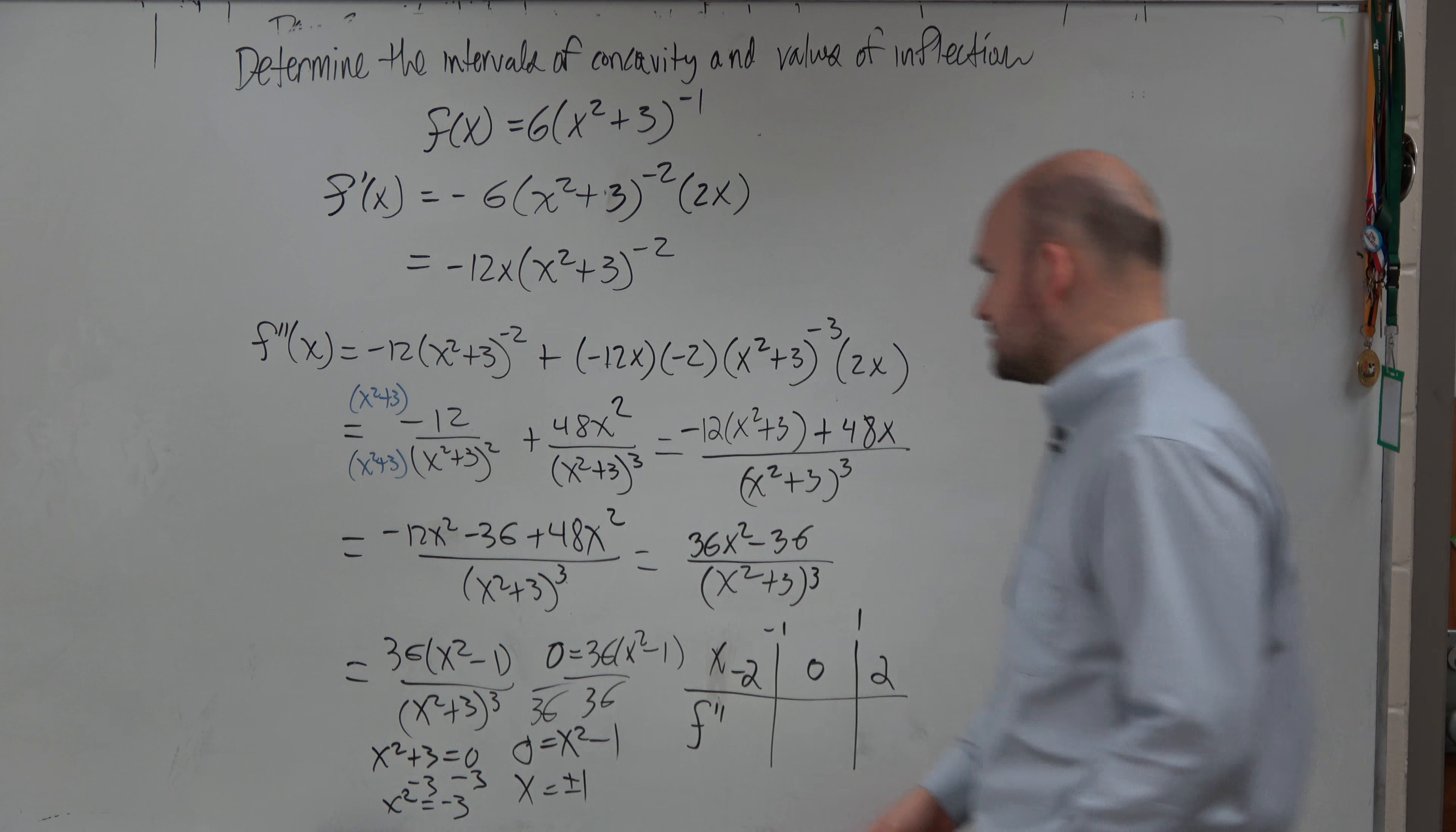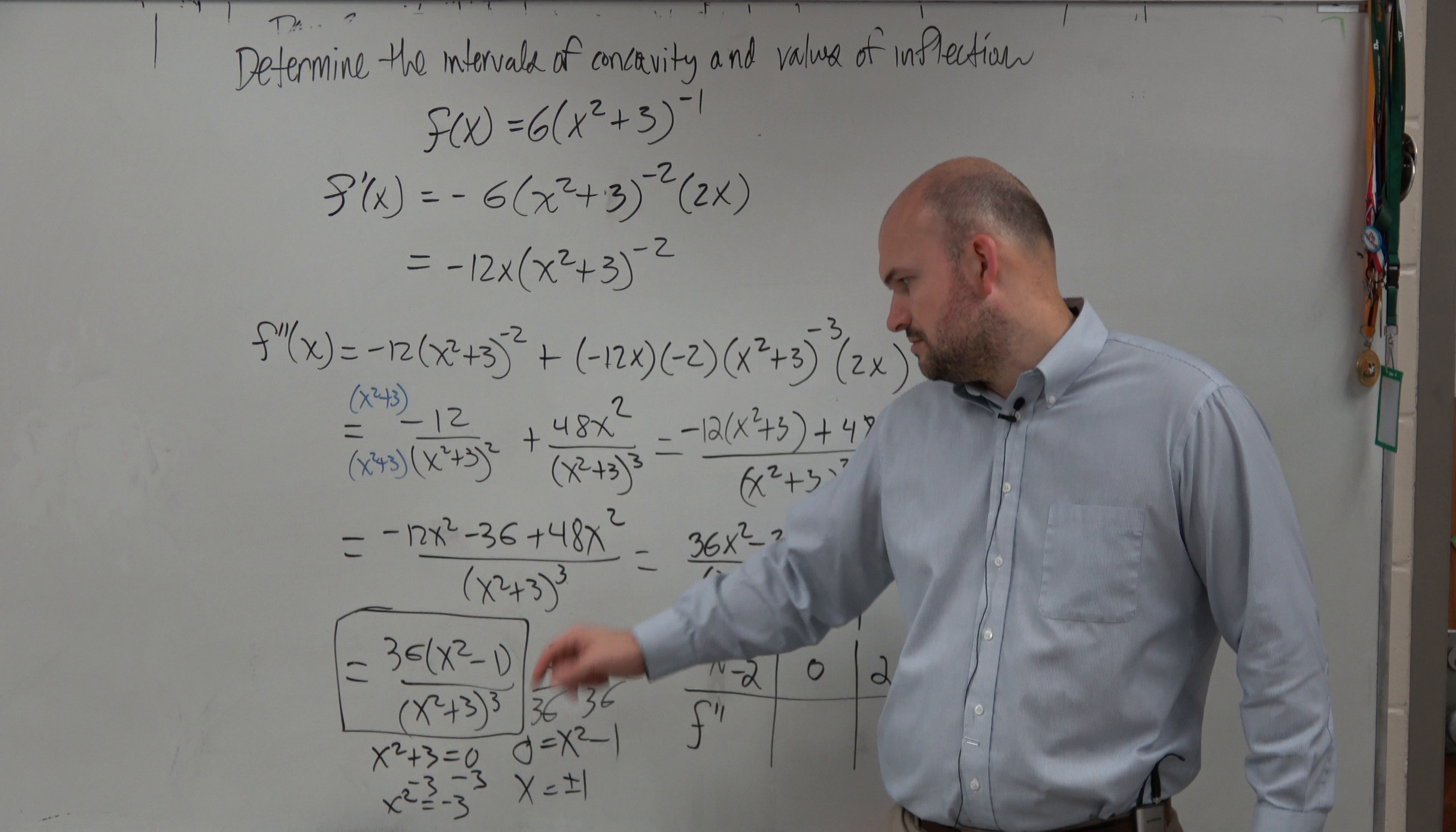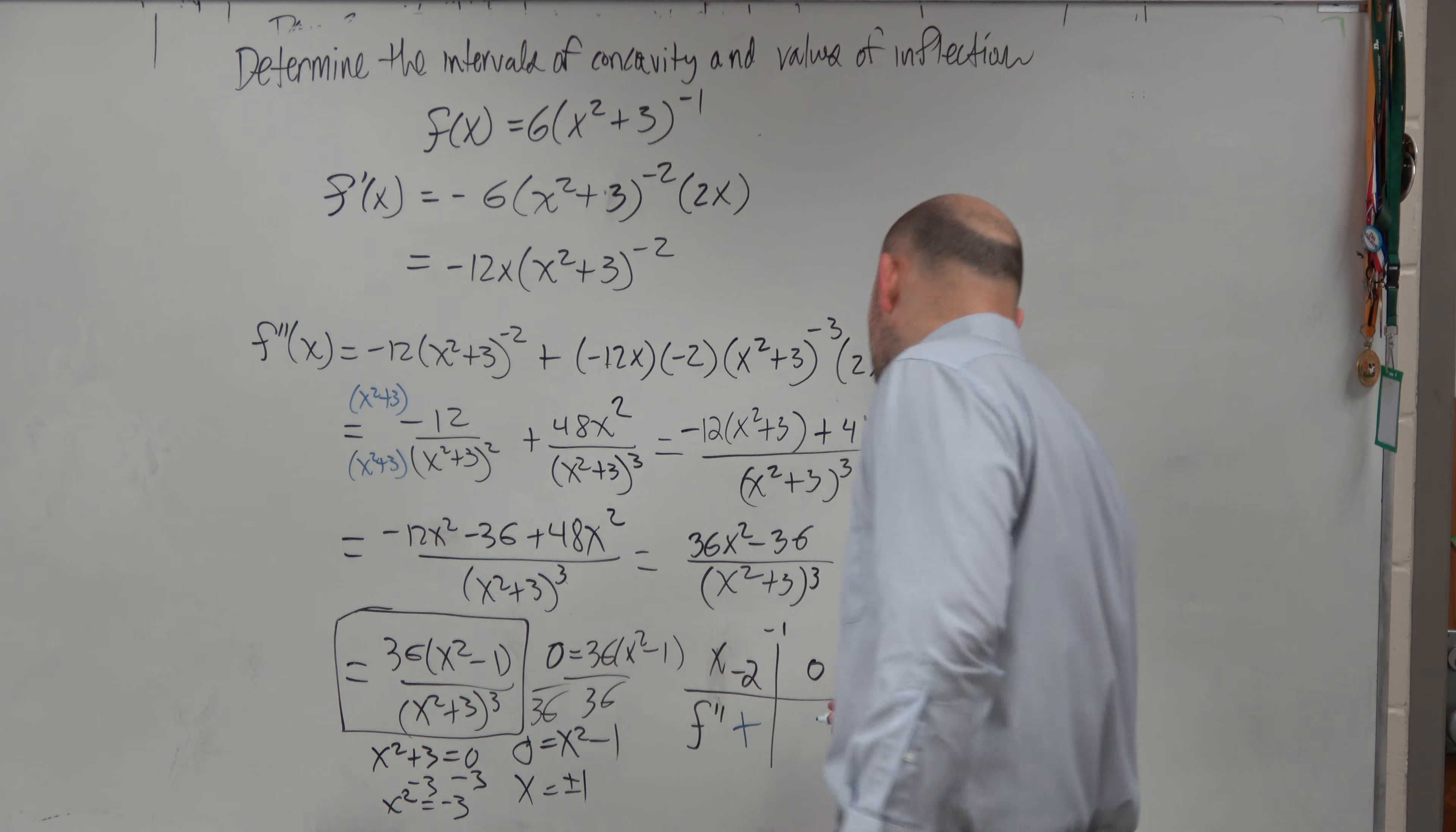And again, we don't really care what the value is. We just want to know, is the value going to be positive or negative? Let's look at our final version of our second derivative. Couple things to notice. Whatever we plug into here for x squared is always going to make it positive. Whatever we plug in for this one is always going to make it positive. So when we plug in a negative 2, we're going to get a positive over a positive, which is positive. Plug in 0. 0 squared is 0, 0 minus 1 is negative 1. Negative 1 times 36 is negative, so we have a negative numerator, and that's going to be positive. Negative over positive is negative.